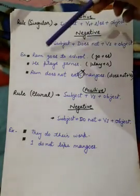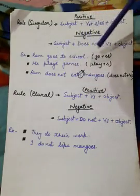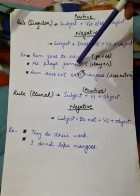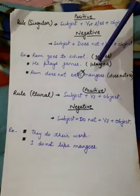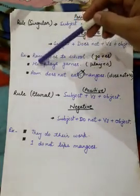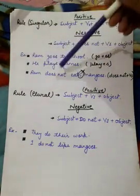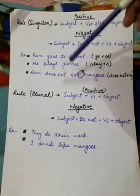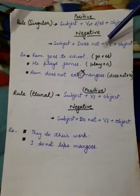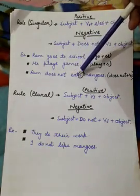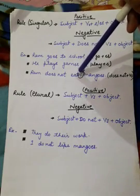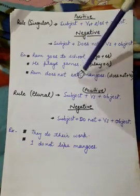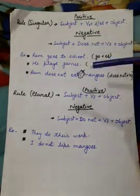For example: 'Ram goes to school' — Ram is singular so we add 'es' to go. 'He plays games' — play is the first form of the verb and since the subject is he, we add 's'. For negative: 'Ram does not eat mangoes' — since does not is already used, we do not add s or es to the verb. Using 'does not' plus 'eats' would be wrong.